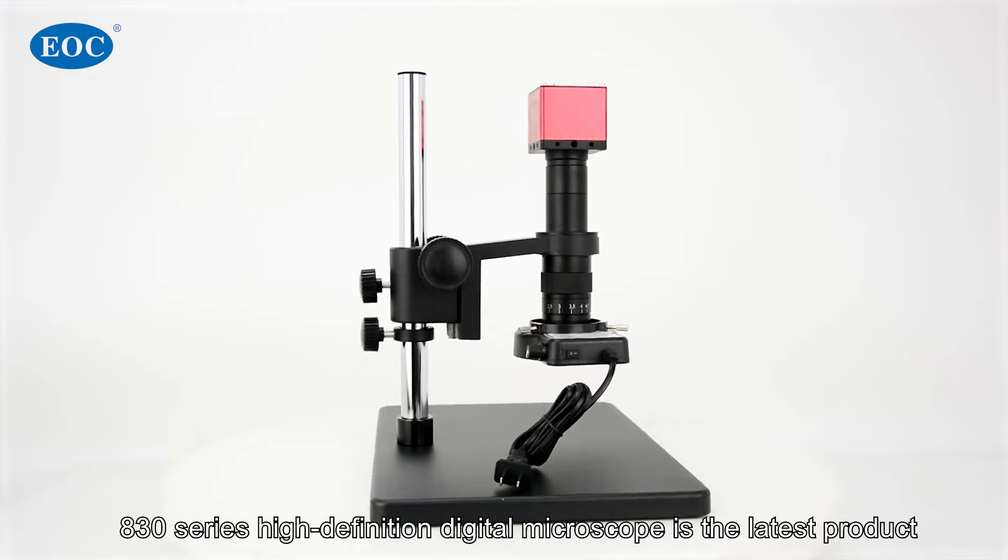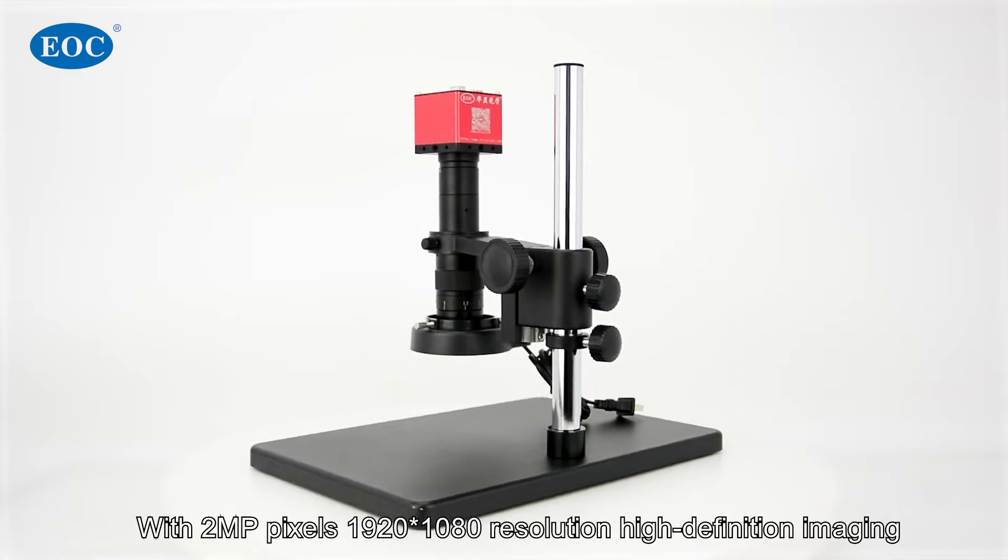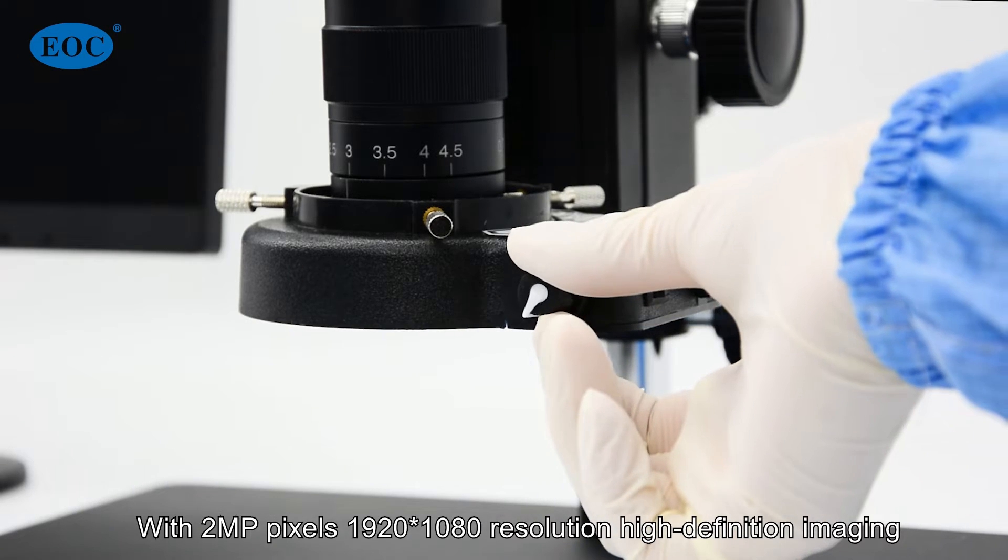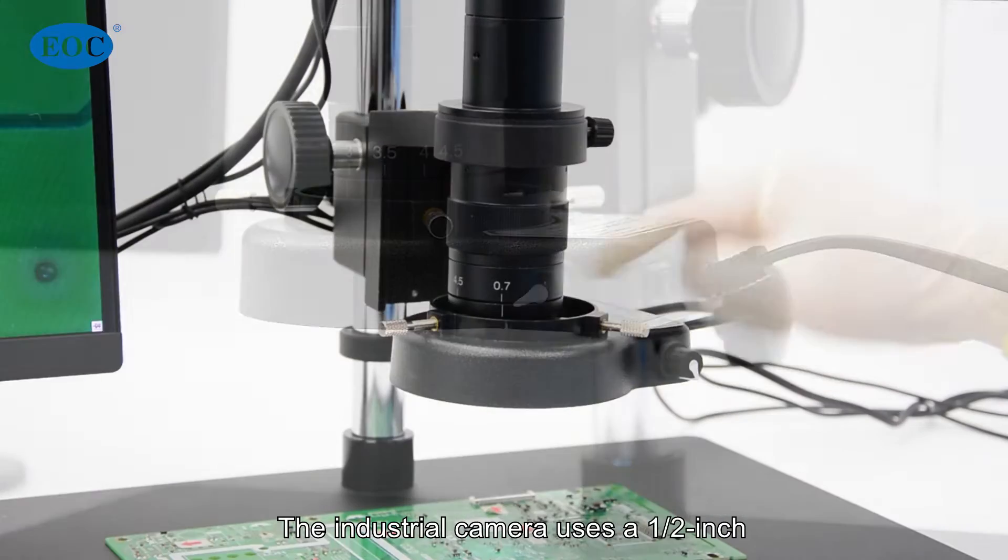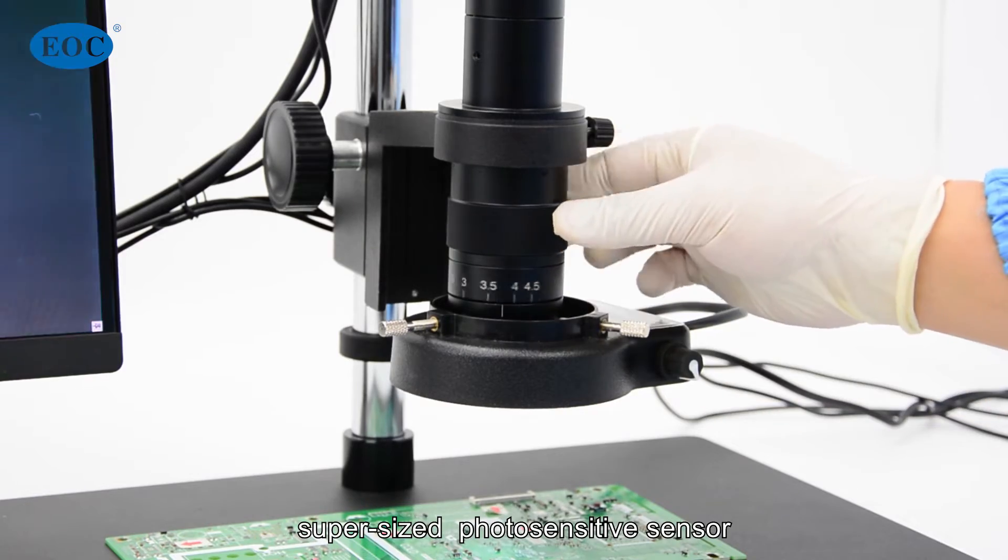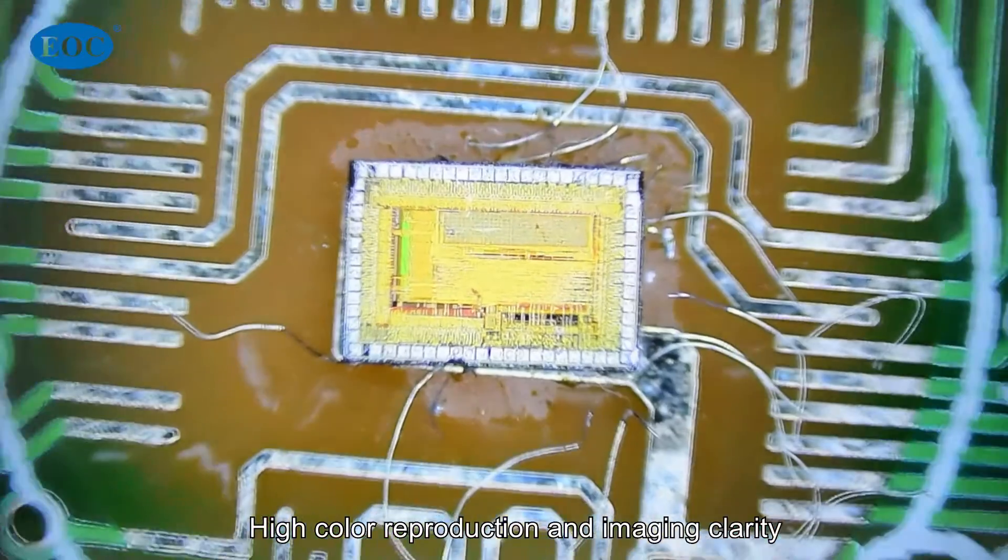The 830 series high-definition digital microscope is the latest product of EOC company, with 2MP pixels, 1920 by 1080 resolution, and high-definition imaging. The industrial camera uses a half-inch supersized photosensitive sensor with high color reproduction and imaging clarity, which is the best of the same level of microscopes.